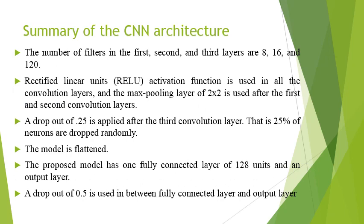In the proposed CNN architecture, I use 8 filters of size 5×5 in the first convolution layer, 16 filters in the second convolution layer, and 120 filters of size 5×5 in the third convolution layer. The activation function used is ReLU, which sets all negative values to zero and keeps positive values unchanged. A 2×2 filter is used in max pooling, and a dropout of 0.25 means 25% of neurons are dropped randomly.